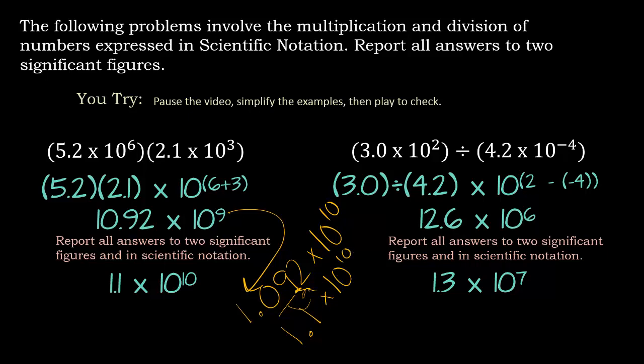The next one, I basically did the same thing. So I need to change this to scientific notation, which is 1.26 times 10 to the 7th. But I can only have two significant digits. So when I look here, I know I have to round up. So that's how I got 1.3 times 10 to the 7th.